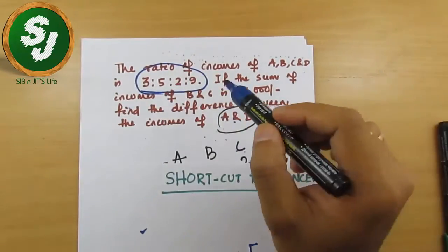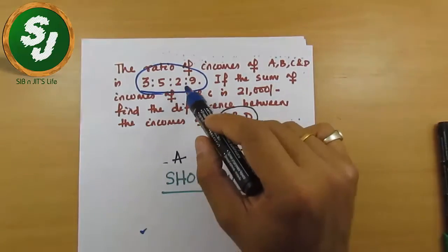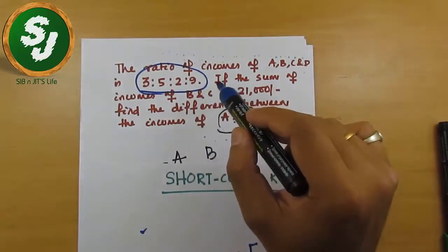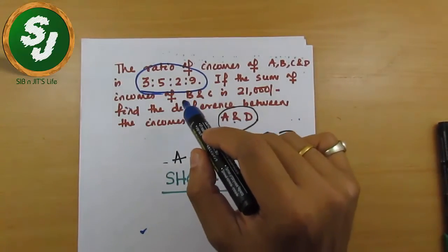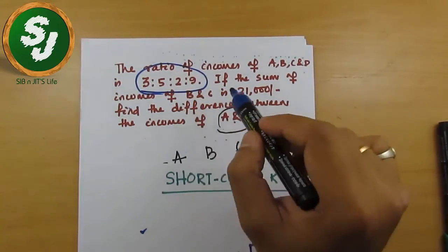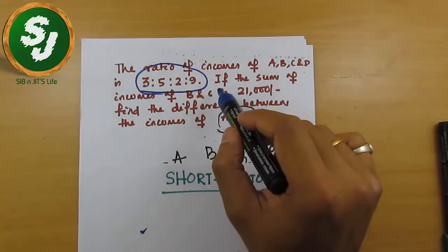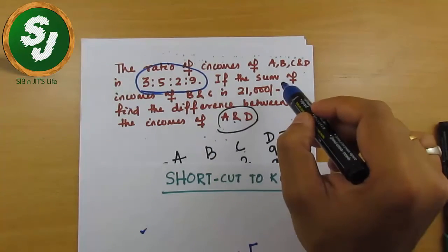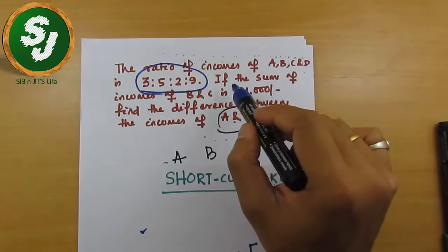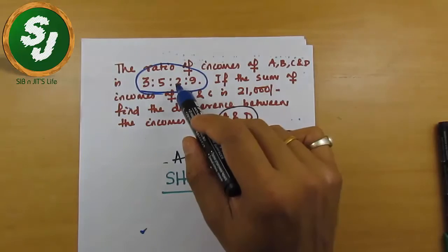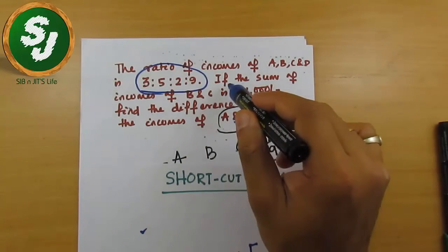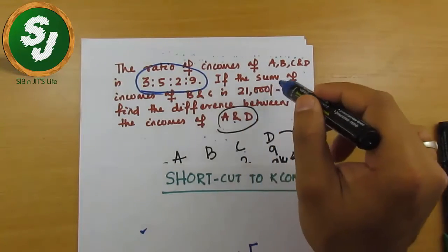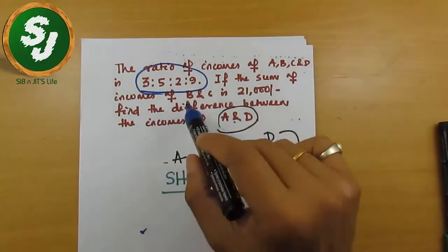For example, the ratio of incomes of A, B, C, D is 3:5:2:9 — this is the information about ratio. In the next sentence they give another piece of information which will be useful to solve the question. First they gave the ratio, then in the next part they said the sum of the incomes of B and C is 21,000.